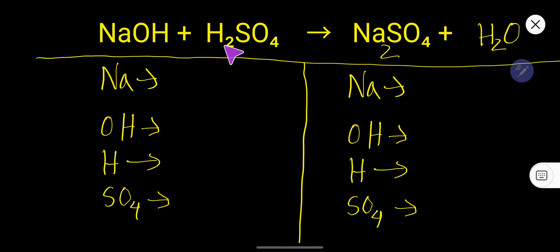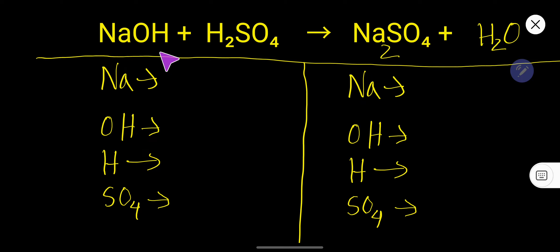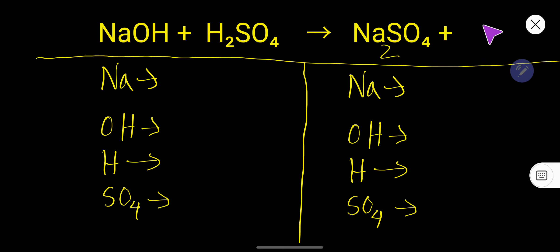How to balance sodium hydroxide and sulfuric acid that produce sodium sulfate plus water. To balance this equation easily, on the left hand side you see the presence of water, but on the right hand side there is no water — we have water written differently. So in this case, always try to rewrite water as HOH, and this will help to balance this equation easily.